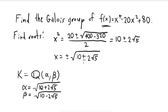Now we want to figure out what the Galois group of this polynomial is. One observation about f(x) is that it is an irreducible polynomial, and one way to see that is using Eisenstein's criterion. Using Eisenstein's criterion with p equal to 5: p does not divide the leading coefficient, it does divide both middle coefficients, and p squared does not divide 80. So all conditions are met for f to be irreducible.